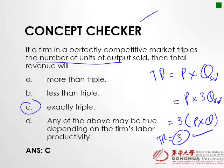If you understand the concept, try to answer this question. If a firm in a perfectly competitive market triples the number of units of output sold, what happens to total revenue? Remember the total revenue formula: price times quantity sold. If the quantity is tripled, using the mathematical property, the total revenue will also be tripled. So the answer is C.